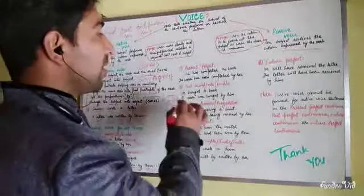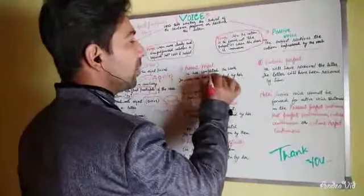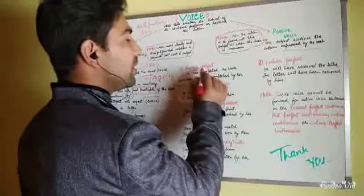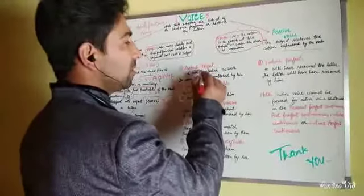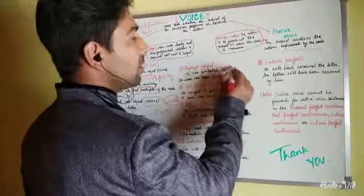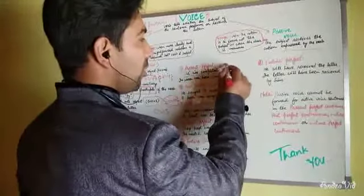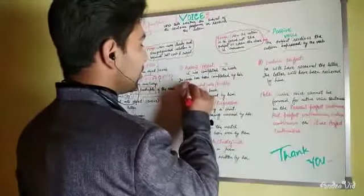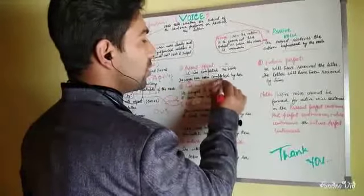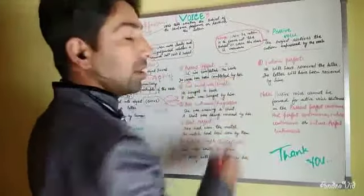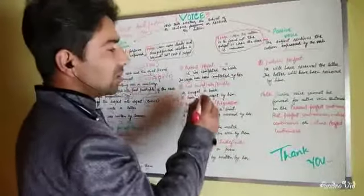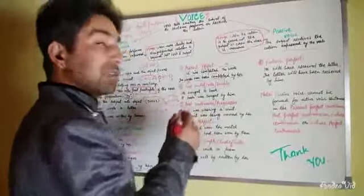Now present perfect: 'She has completed the work.' The subject is 'she,' the helping verb is 'has,' 'completed' is already the third form of the verb, and 'the work' is the object. In passive, the object comes first, followed by the helping verb 'has been,' then the V3 form of the verb, then the preposition 'by,' then the subject: 'The work has been completed by her.'